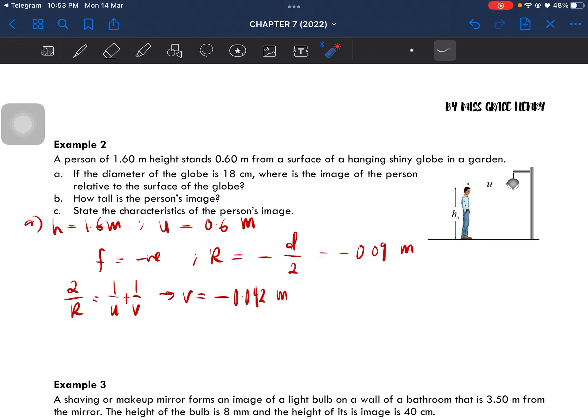which is behind the globe's surface, behind this surface. Why is it behind the surface? It's because this is a negative value.